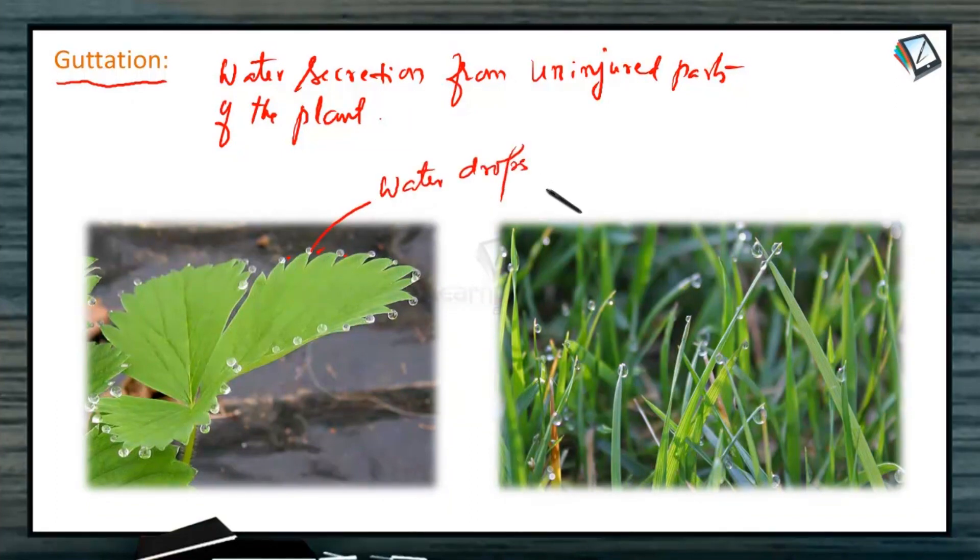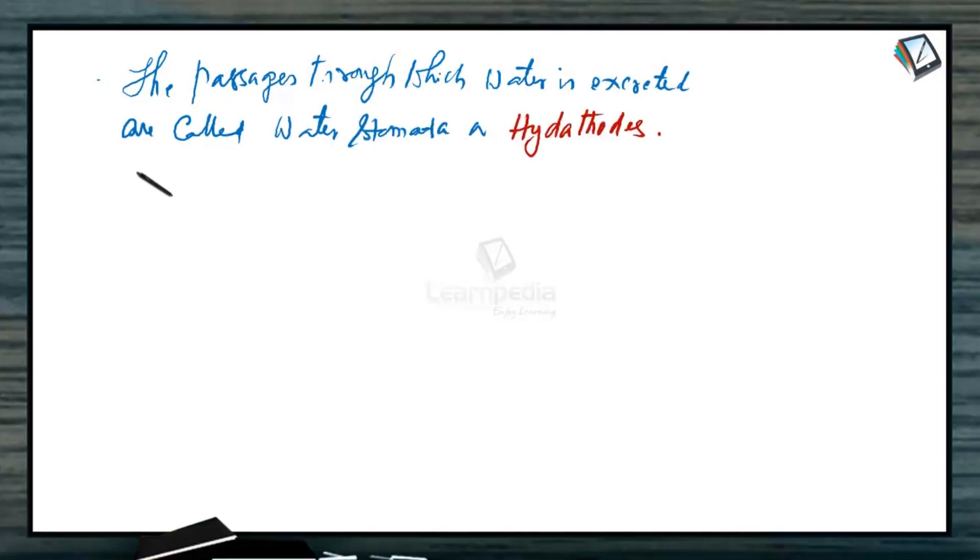So, the secretion of water in the form of water drops through uninjured parts, this is called guttation. The processes through which water is excreted are called water stomata or hydathodes.